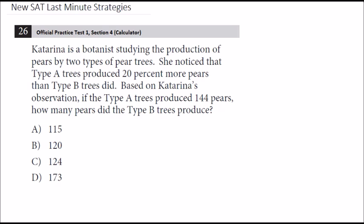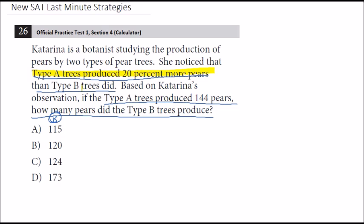Here's the first one — it's from official practice test 1, section 4, so you do have a calculator on this one. Katarina is a botanist studying the production of pears by two types of pear trees. She noticed that type A trees produced 20% more pears than type B trees did. If the type A trees produced 144 pears, how many pears did the type B trees produce? The key is recognizing that the answers are all type B values. The common error would be to take 20% of 144 and subtract it, but that's type B producing 20% less than type A — not the same thing, because we'd be taking percentages of different numbers.